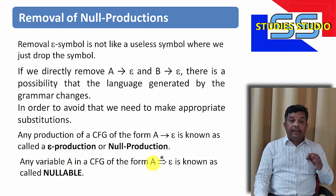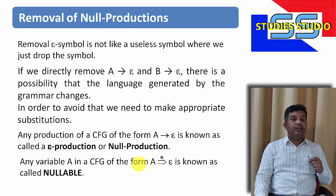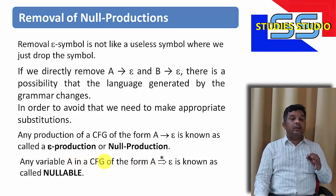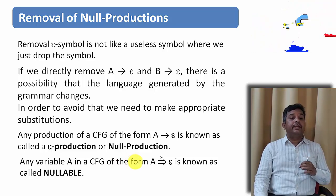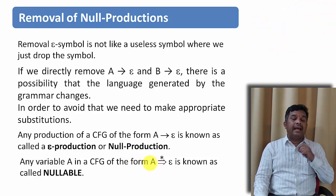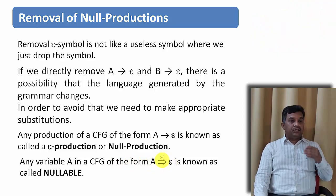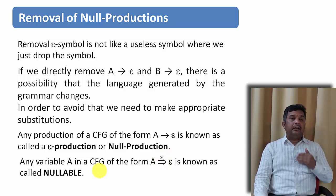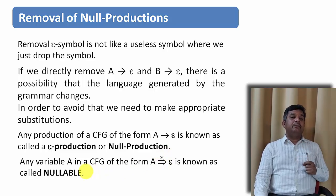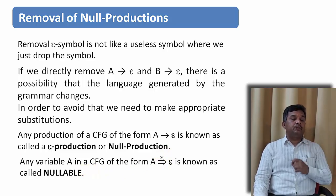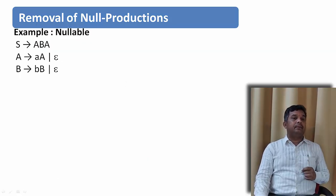Any variable A in a context-free grammar from where we can reach epsilon by one or many substitutions is known as a nullable variable. Let us understand what a nullable variable is from an example.